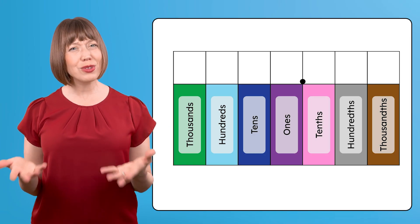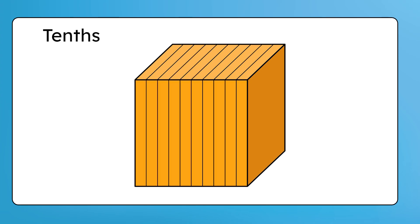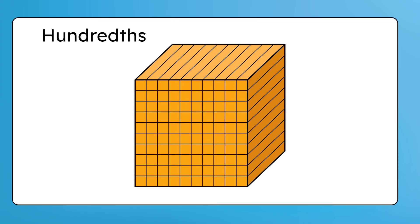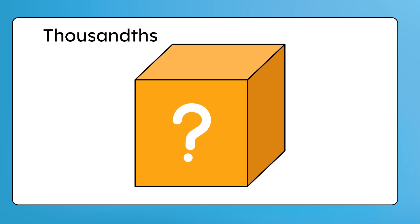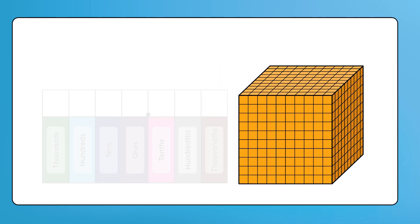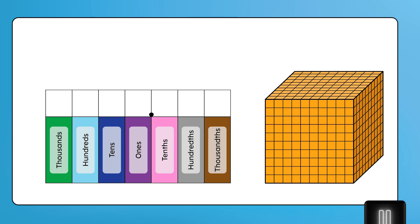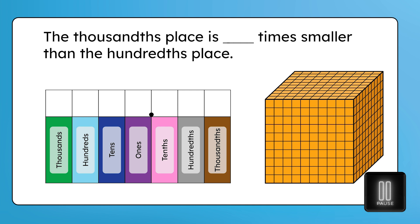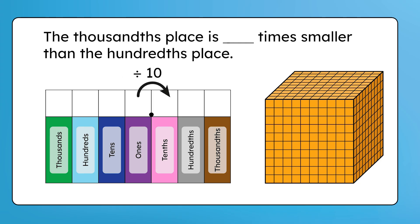But how big is a thousandth? We know that tenths split a whole into ten pieces, and hundredths split a whole into one hundred pieces. If it follows the same pattern, how many pieces do you think thousandths split a whole into? One thousand pieces! So the pieces are getting smaller as we move to the right on the place value chart. Pause here to record how many times smaller the thousandths place is compared to the hundredths place. Each time we move one place to the right, the pieces get ten times smaller, because the whole is being split into ten times as many parts, or being divided by ten. That means the thousandths place is ten times smaller than the hundredths place.